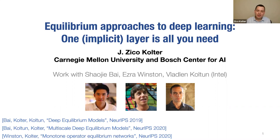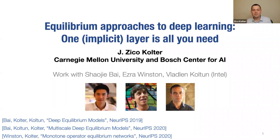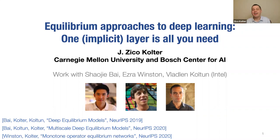Thanks very much for having me. I'm going to talk today about our work in equilibrium models, and the sort of tacky title of this is that one implicit layer is all you need. It's the trend these days in machine learning to talk about how X is all you need, but in this case we can actually prove that one layer is all you need in fact. So everything else you do with deep learning you can do with just one layer. It sounds like a bold claim, but I'll try to back it up.